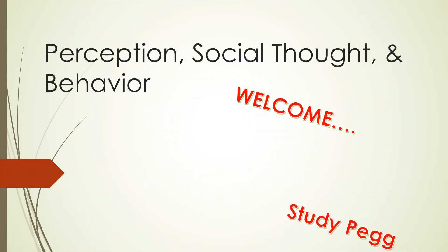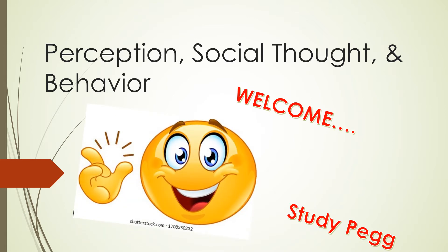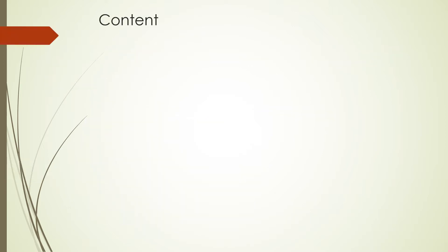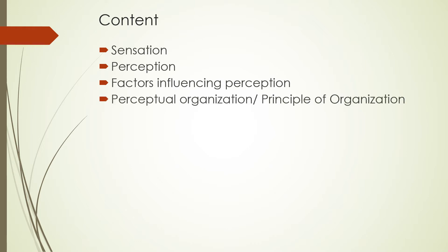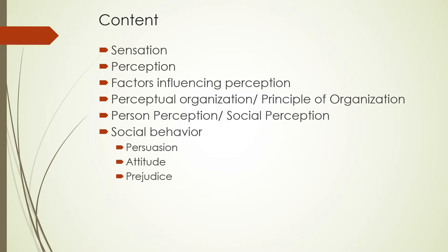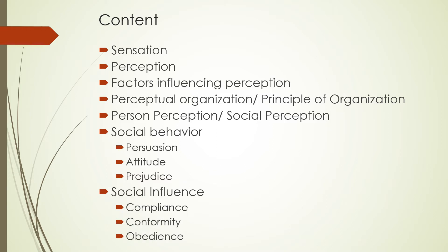Hello everyone, welcome to my channel. Today I am going to talk about the second chapter of psychology, which is perception — thought and behavior. The content we are going to study includes sensation, perception, factors influencing perception, perceptual organization, person perception or social perception, and social behavior such as persuasion, attitude, and prejudice, as well as social influence such as compliance, conformity, and obedience.